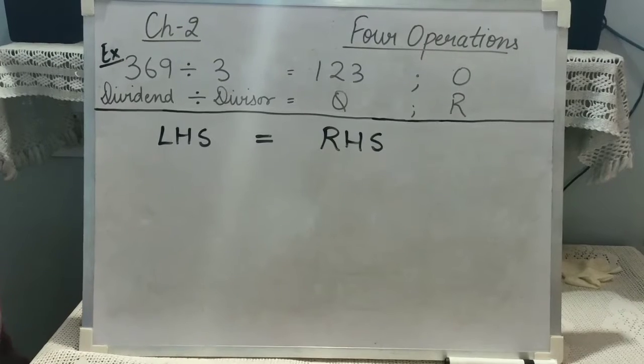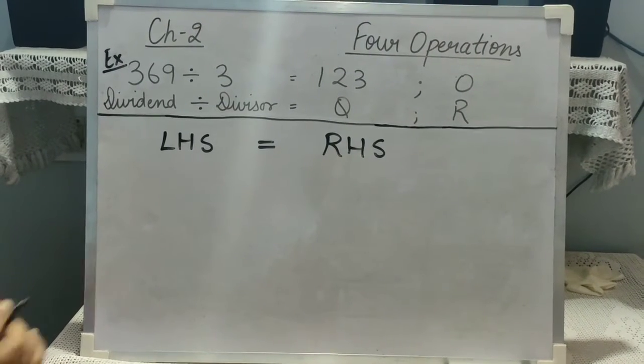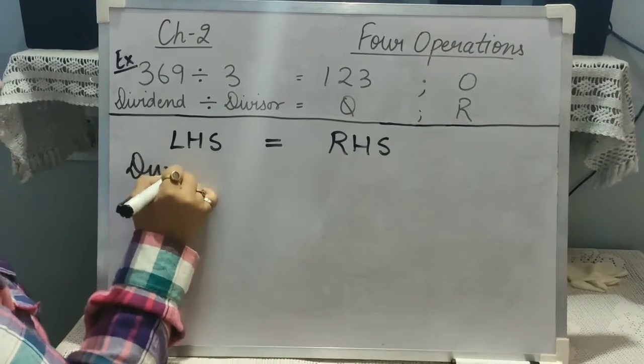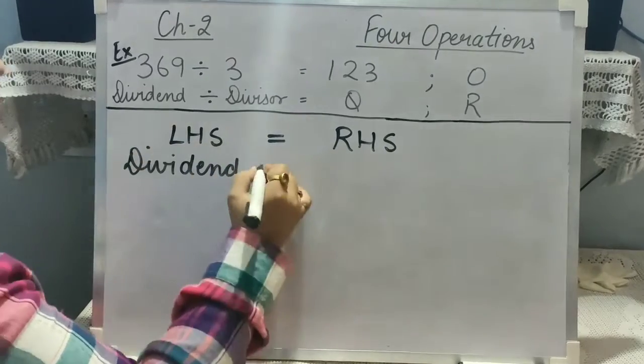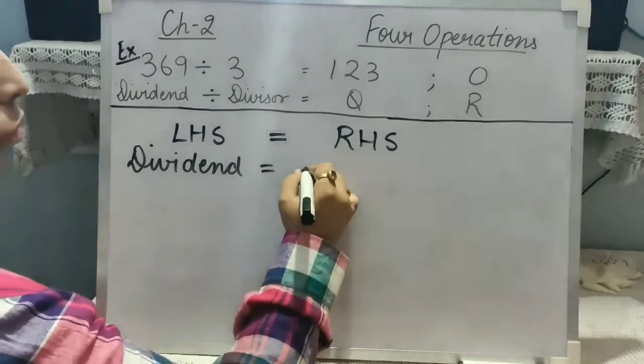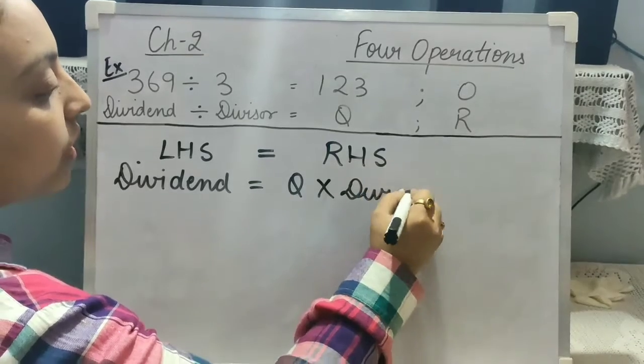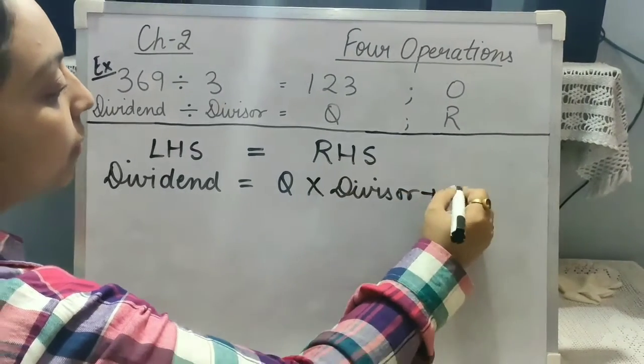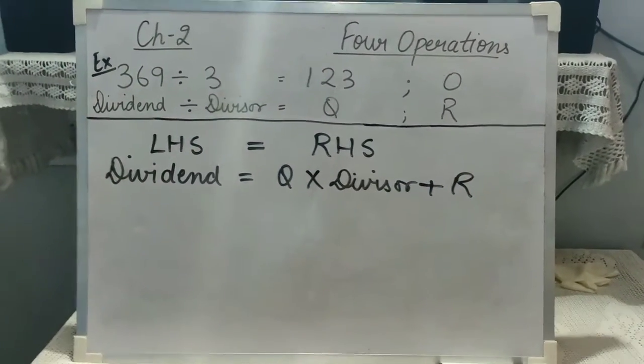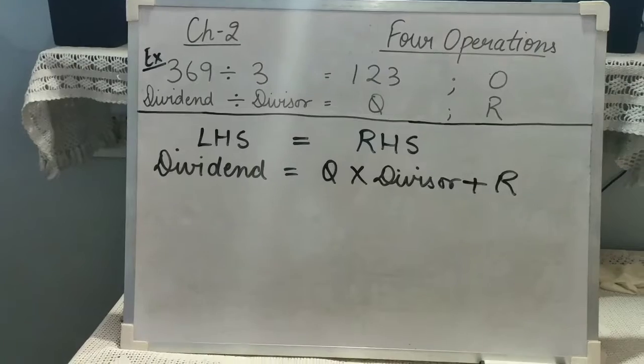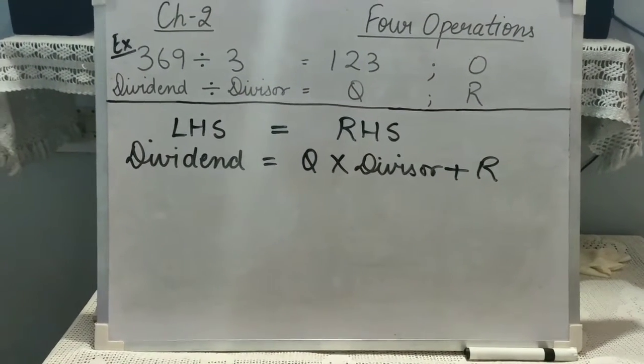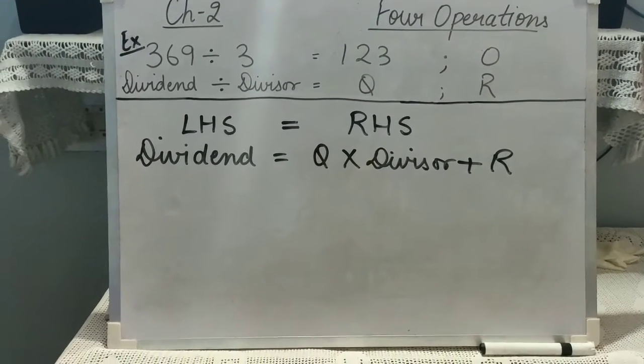The equation for checking the division sum is: dividend should be equal to the product of quotient and divisor plus remainder. It means, if the product of quotient and divisor plus remainder will be equal to dividend, so our answer is correct.